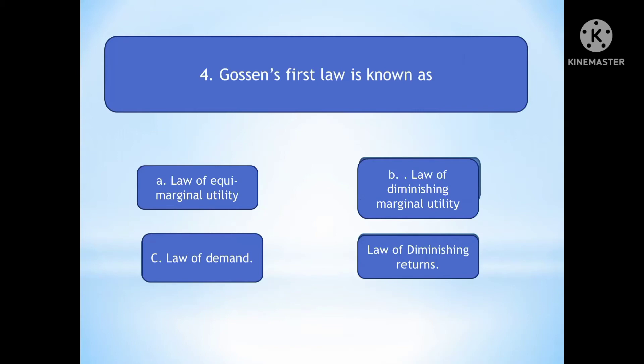Question number four: Gossen's first law is known as? Option A is Law of Equi-Marginal Utility. Option B is Law of Diminishing Marginal Utility. Option C is Law of Demand. Option D is Law of Diminishing Returns. Gossen's first law is the Law of Diminishing Marginal Utility, and Gossen's second law is the Law of Equi-Marginal Utility.